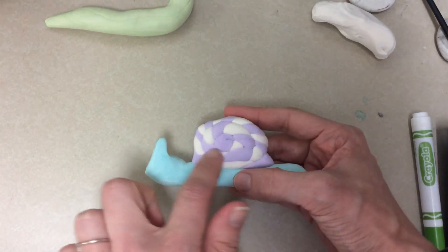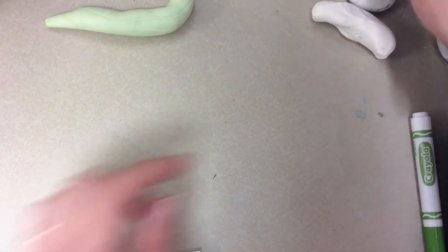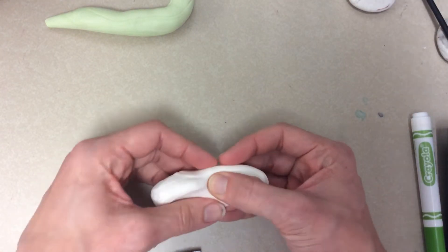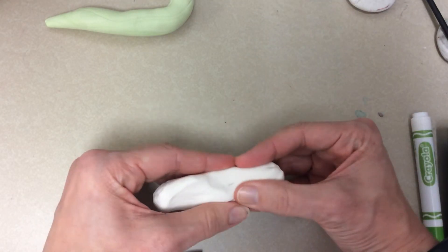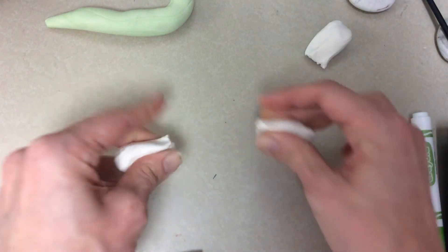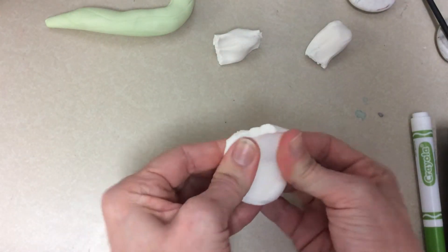Now we're going to talk about the shell. You can get fancy with the shell if you want. But if you want more than one color of Model Magic for your snail shell, then you want to separate it into more than one piece.